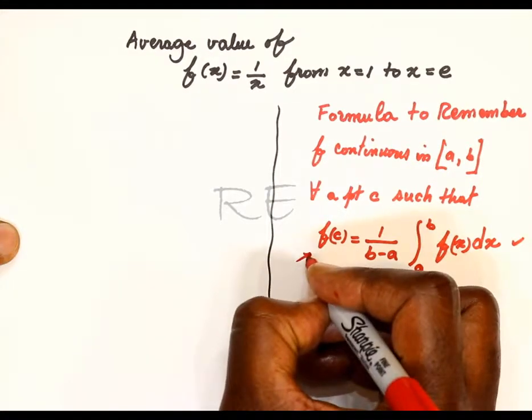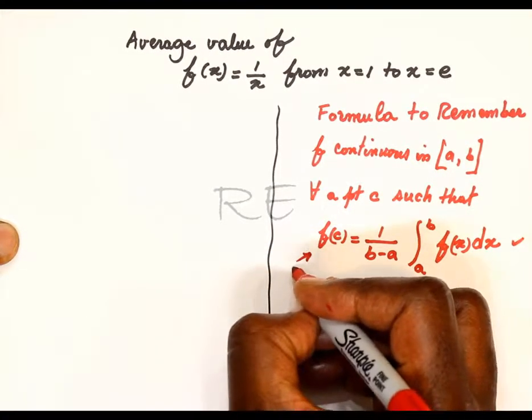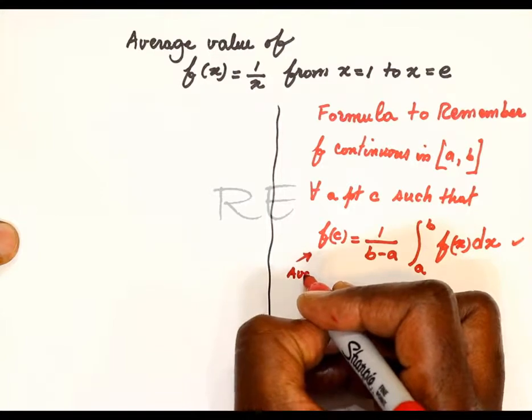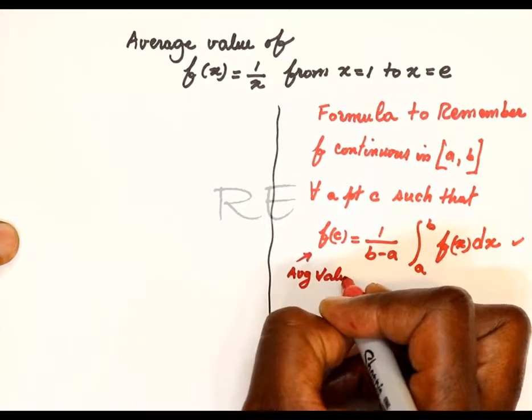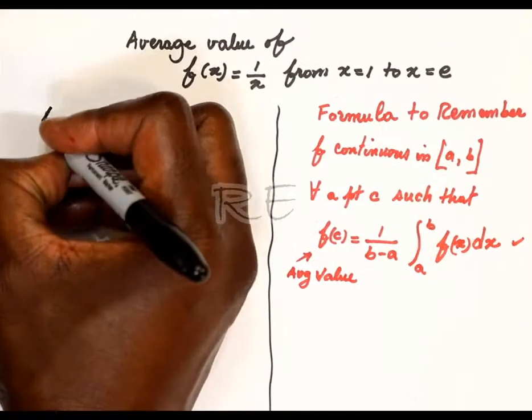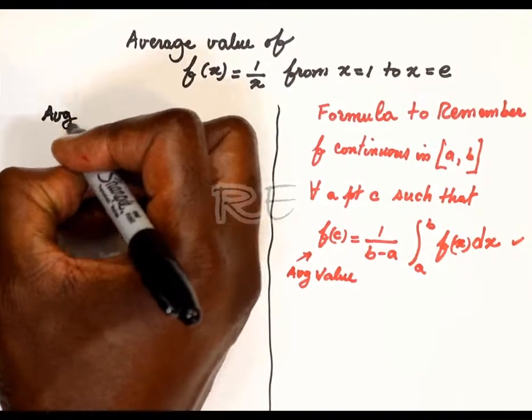F of c is called the average value. So this is the average value theorem for intervals.